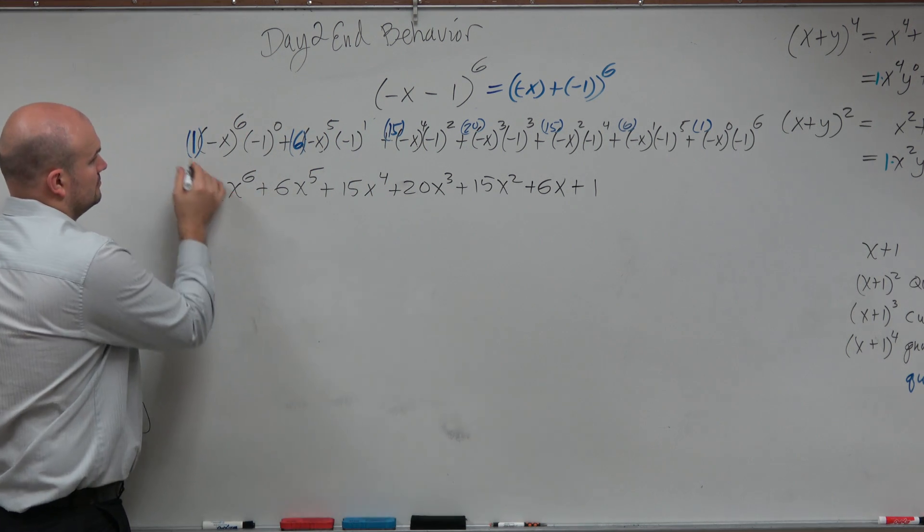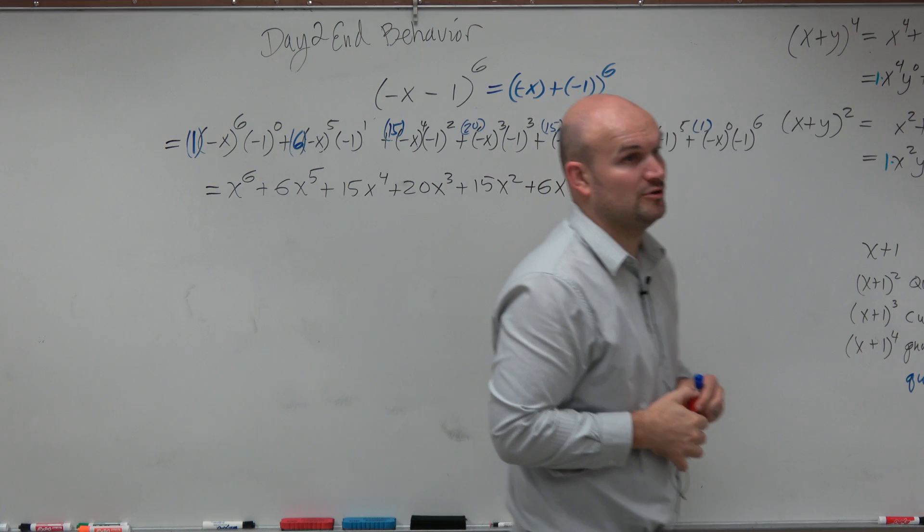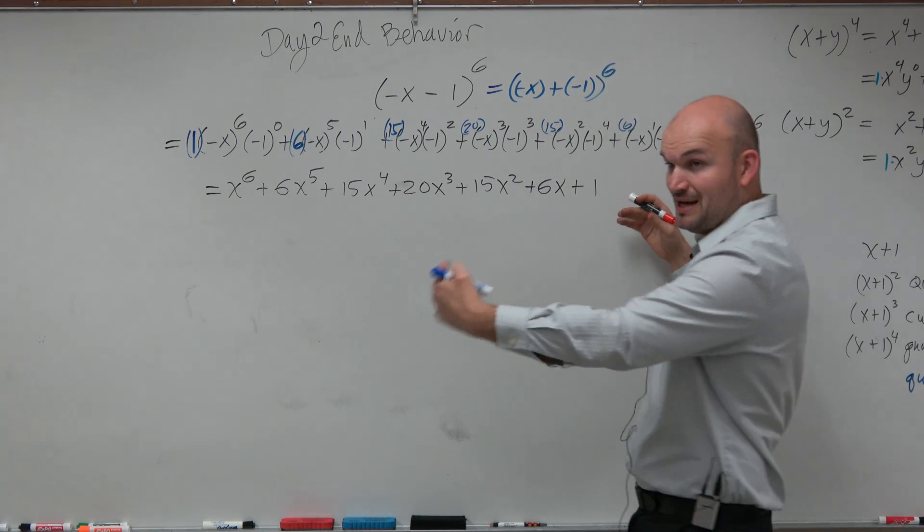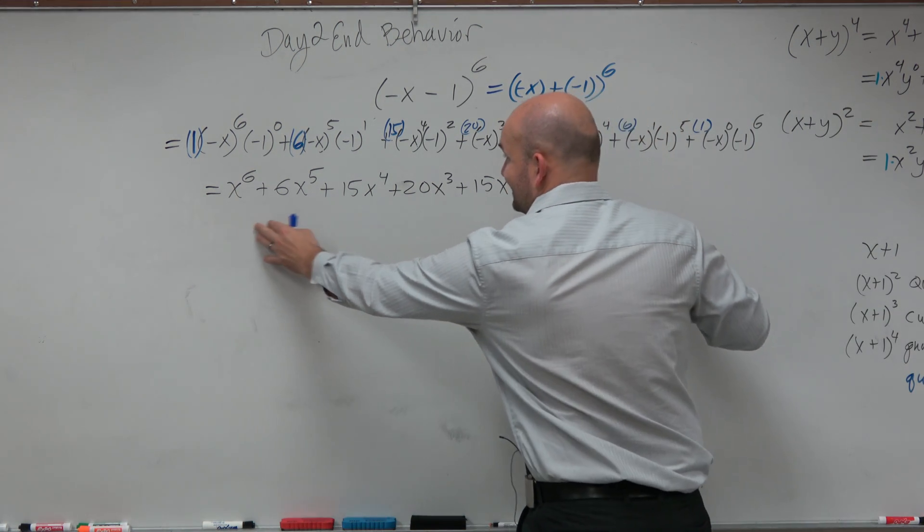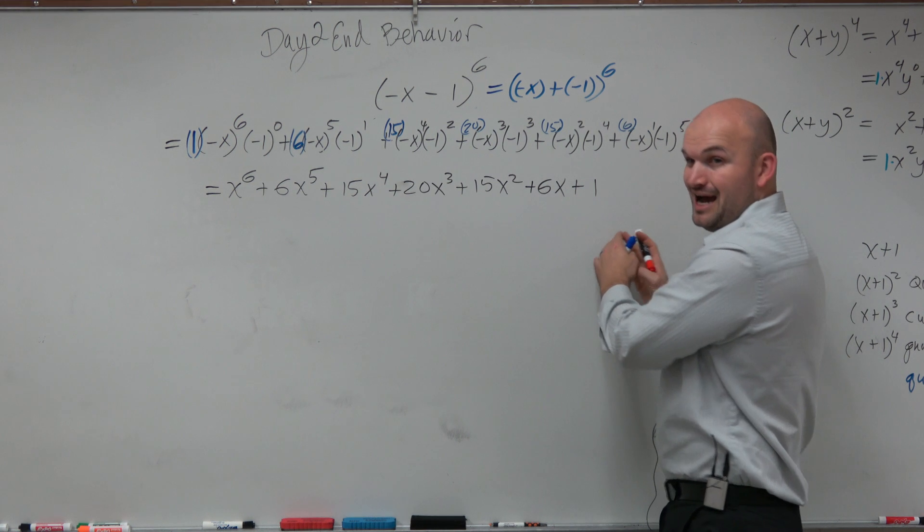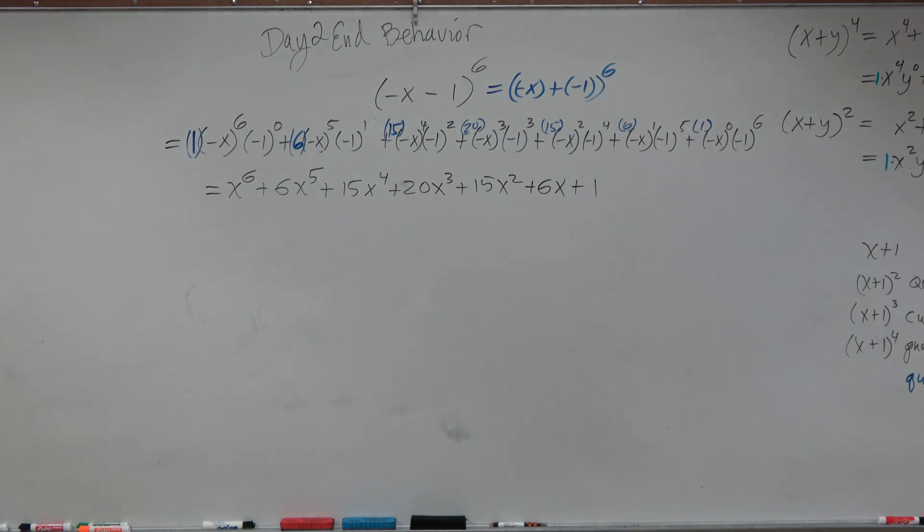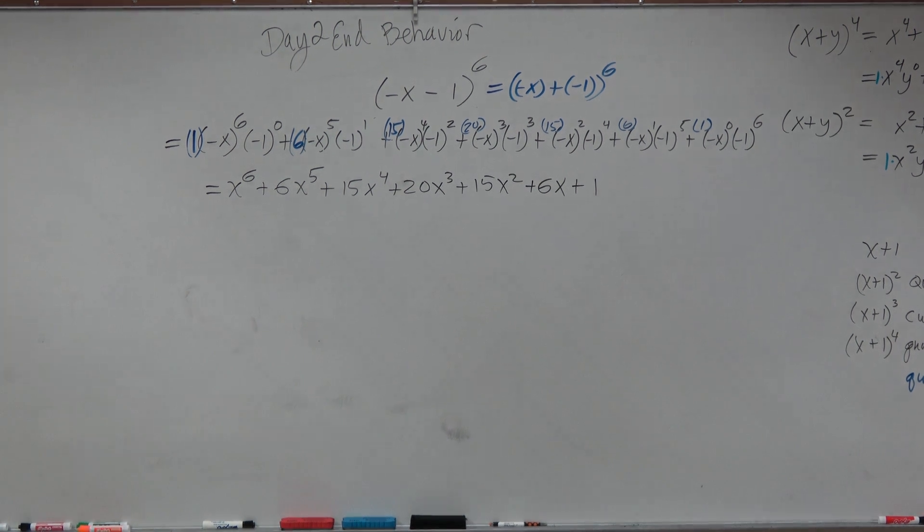So that is what the binomial expansion would be. So if you were to multiply that out with all those binomials, that's exactly your result. Now, was this really that much more efficient? I mean, it was much more efficient. It was still quite a bit of work though, wasn't it?